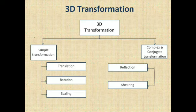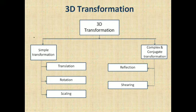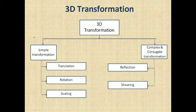These are the categories of 3D transformation. One is a simple transformation, another one is a complex or conjugate transformation. Simple transformation is we have 3: translation, rotation and scaling. The complex is reflection and shearing.